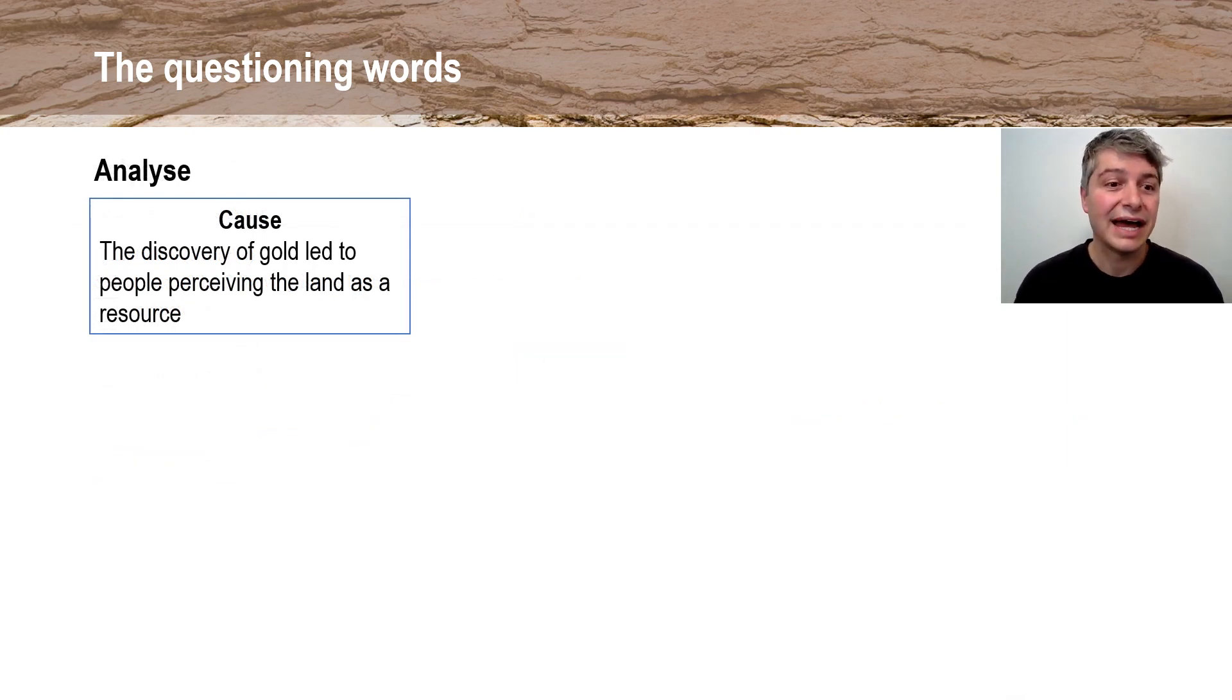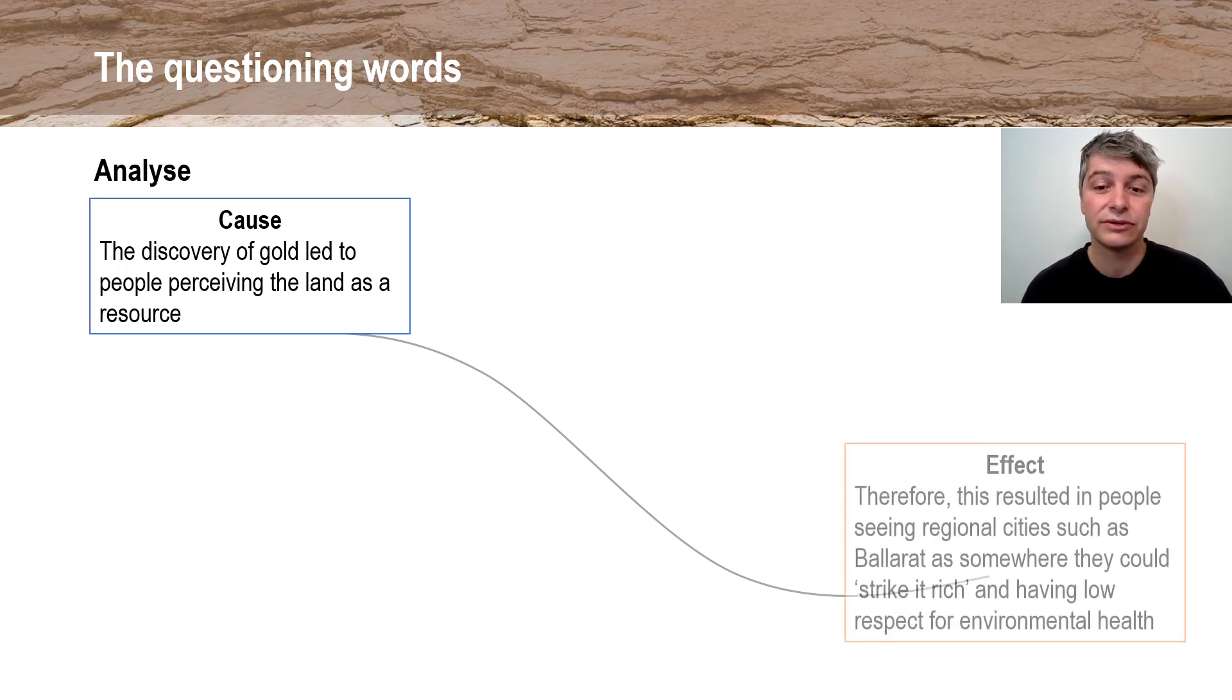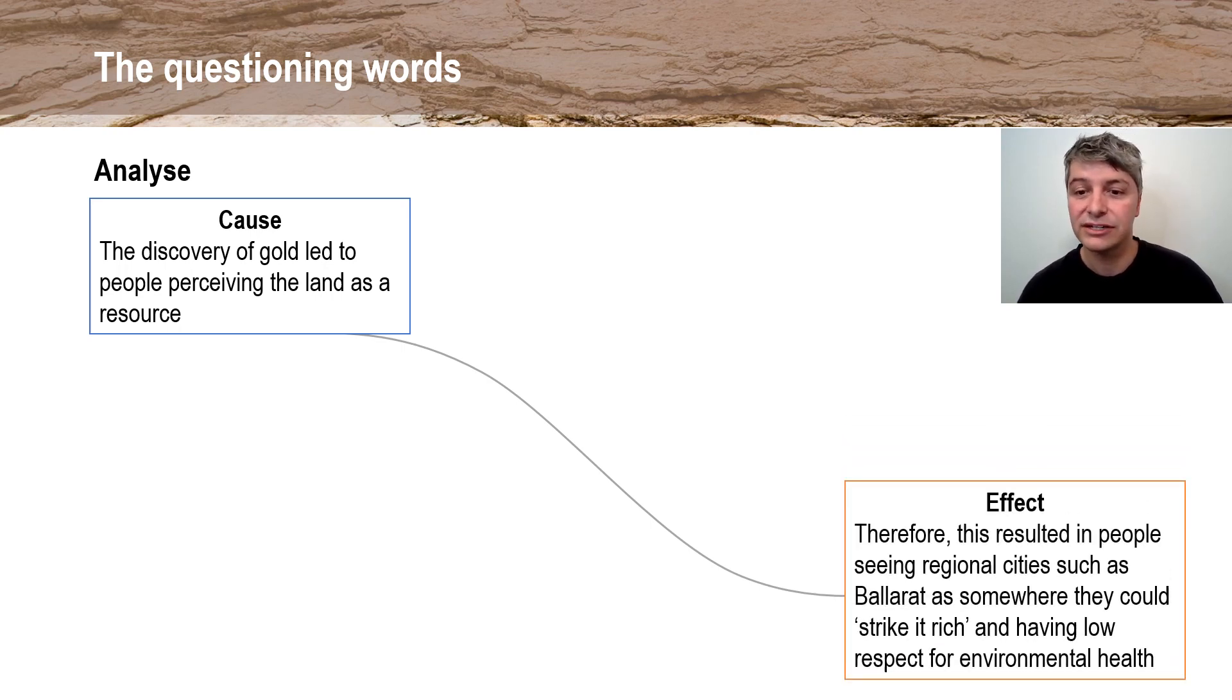So you might be asked to analyze relationships during those historical periods. So you might talk about the period of increasing population, and it might be relevant to your environment, that the discovery of gold led to people perceiving the land as a resource. That's the cause. The effect might be a negative effect on relationships. And the effect could be that therefore this meant that people saw regional areas, somewhere to strike it rich, and they really had low respect for the environment. So there you can see that cause and effect happening there.